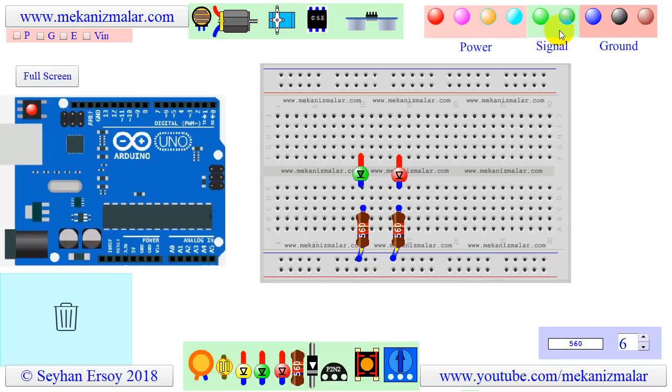There are also two green buttons which are used as signal wire generators. When you double click any button, a wire with button color will be generated onto the button.